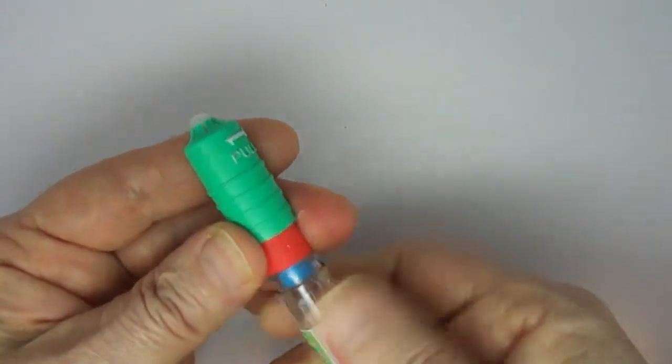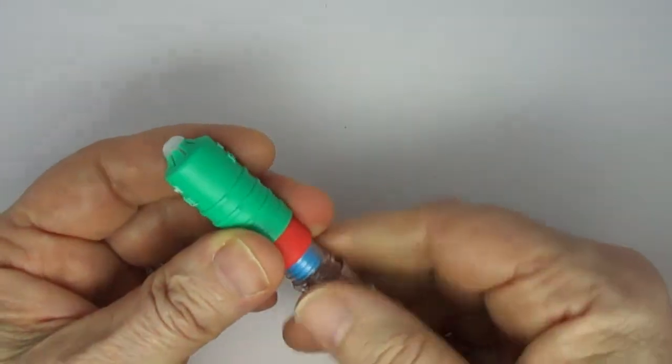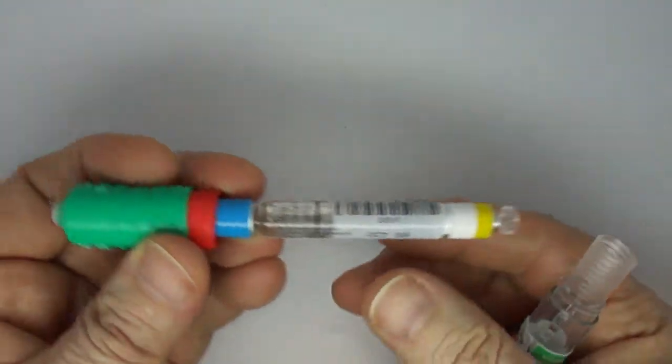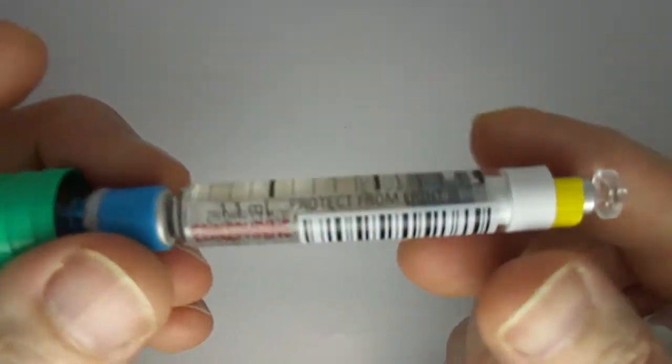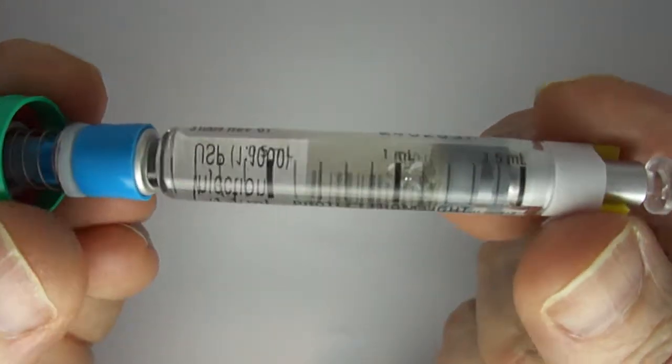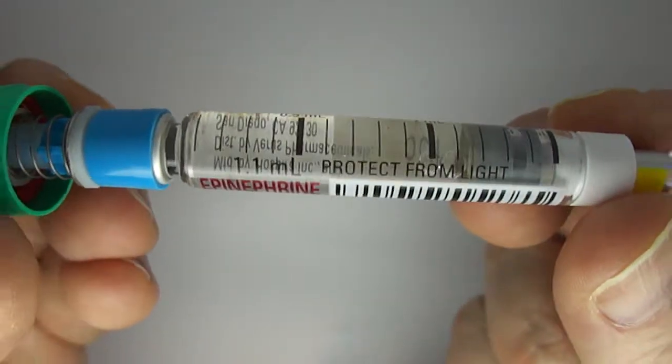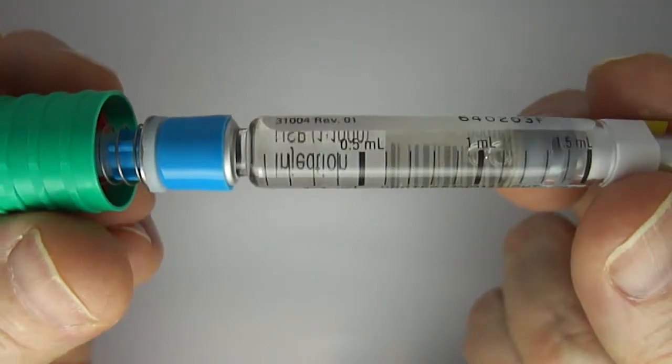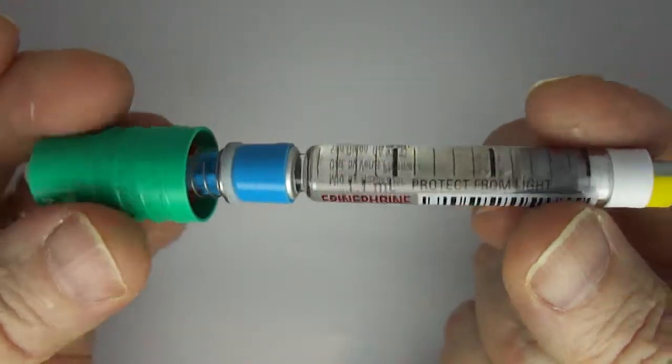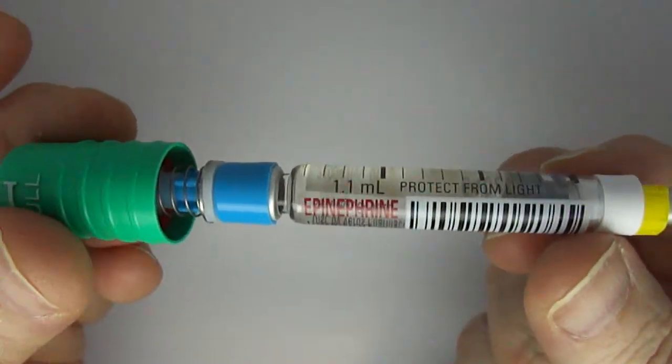If I cheat a little bit—you're not supposed to do it this way—you can actually open it up ahead of time and see that it has this syringe inside. It has a little bit over a mil in there and this is one one-thousandth or one milligram per mil of epinephrine.